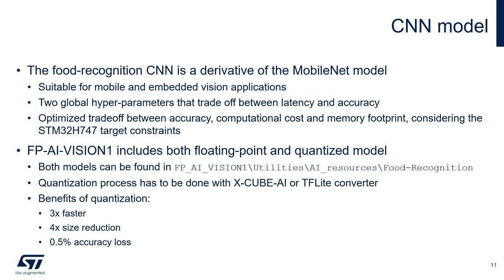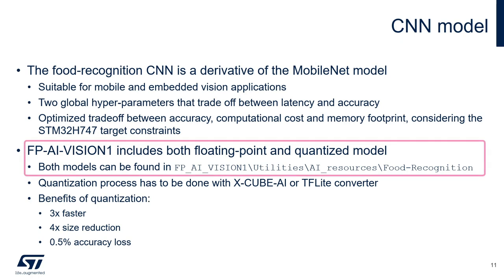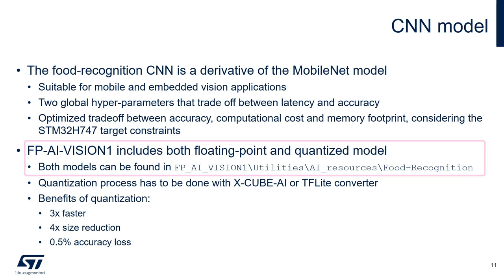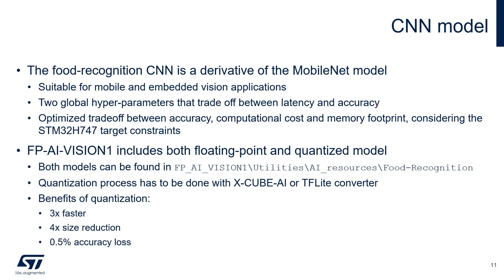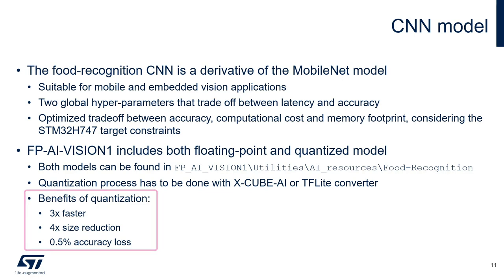As mentioned in previous slides, both floating-point and quantized models are included in the function pack. The quantization process is done using our XCubeAI expansion package. You can also use the TFLite converter to do that. By doing the quantization, you will get three times faster performance, four times reduction of the memory footprint, but only lose 0.5% of the accuracy.